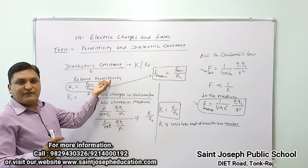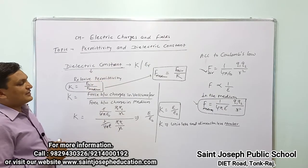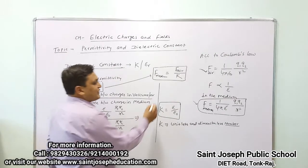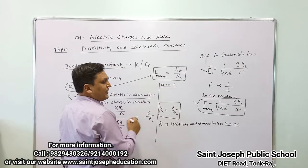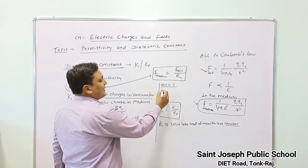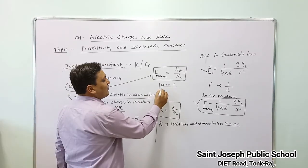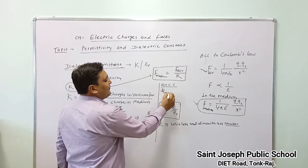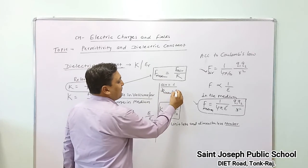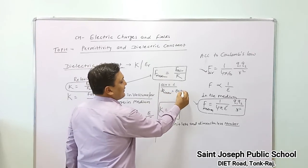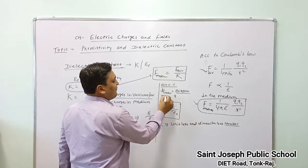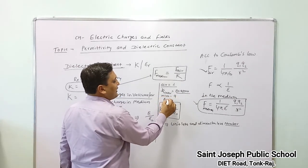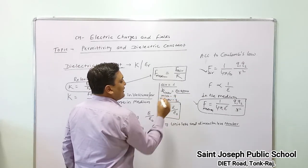The dielectric constant is different for different mediums. For air, the value of dielectric constant K is 1. For distilled water, the value of K is approximately 80. For mica, K is approximately 9. For paper, K is approximately 3. You should remember these values for different mediums.